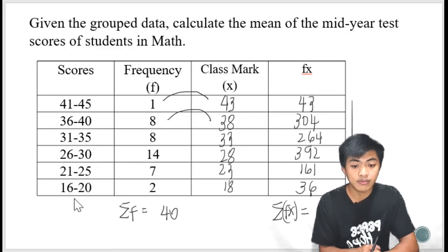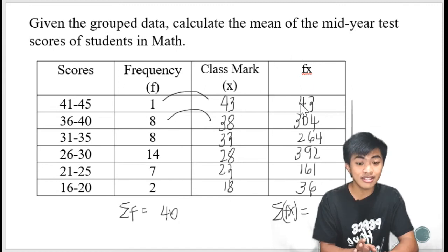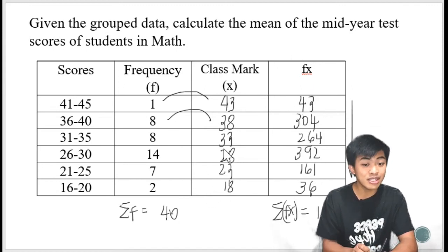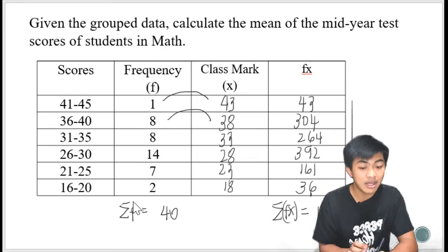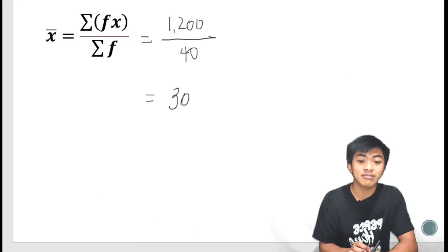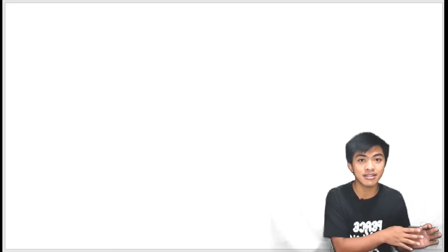Okay, so review. Paano ulit? Binigyan tayo ng group data to get the mean. We add two columns for the class mark and the fx. And then after that, we get the class mark. And then we compute for the fx. Pag-addin lahat ng mga fx para makuha yung summation of fx. And then pag-addin lahat yung f para makuha yung summation of f. And then substitute to the formula and boom! We already have the mean. So that is how you're going to get the mean using the class mark. There is actually another method when you will be using the coded deviation.